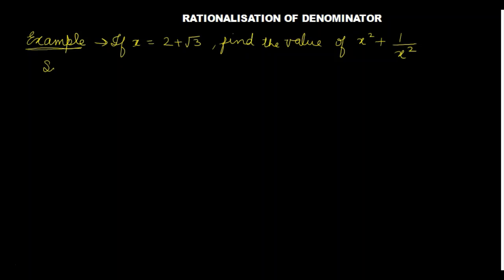This is our example. You will find out: if x is equal to 2 plus root 3, find the value of x square plus 1 by x square. There are two patterns that you can use to do this. First, let's take x is equal to 2 plus root 3, then you square it and find out a value in this way.